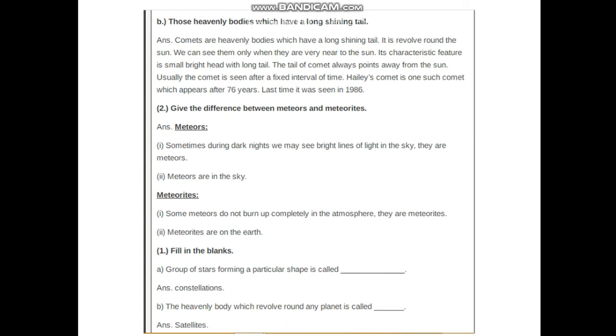Give the difference between meteors and meteorites. Answer: Meteors - sometimes during dark nights we may see bright lines of light in the sky. They are meteors. Meteors are in the sky. Meteorites - some meteors do not burn up completely in the atmosphere. They are meteorites. Meteorites are on the earth.